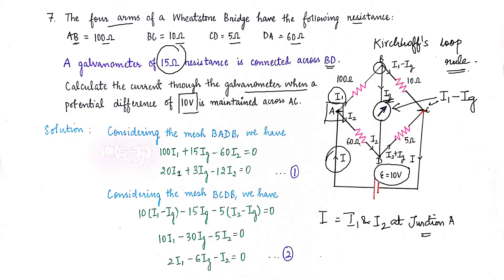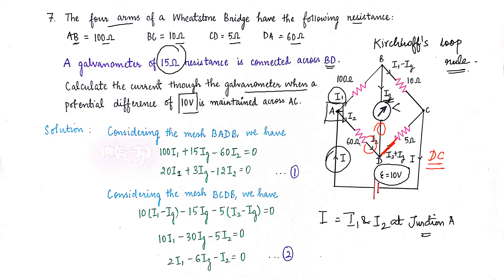Junction C does not have the same current as B because multiple loops connect there. The current flowing through the 5-ohm arm DC is I2 plus Ig — that is the sum arriving at junction C from both paths. Now we will identify the loops we will consider for solving the question.